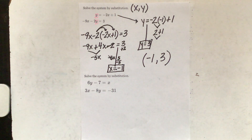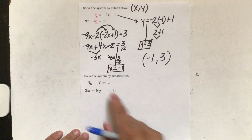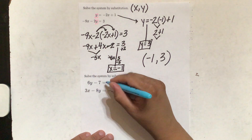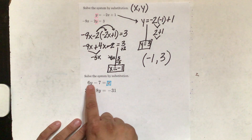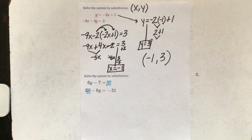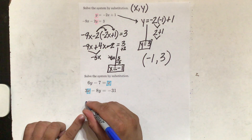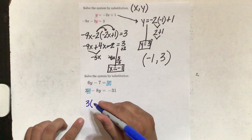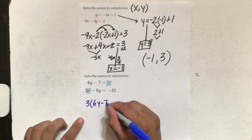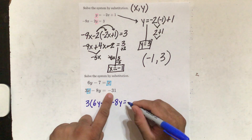So let's try the second example here. On this one it looks a little different. If you notice, x is by itself here — this x is by itself and is the same as that x right there. That means I can plug this in to x right here, and that's exactly what I'm going to do. So I'm going to write 3, copying this equation, but instead of writing x I'm going to write parentheses — and write these two terms inside: 6y minus 7 — then finish it out: minus 8y equals negative 31.